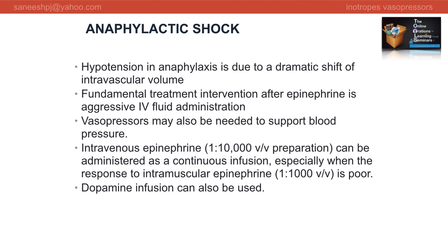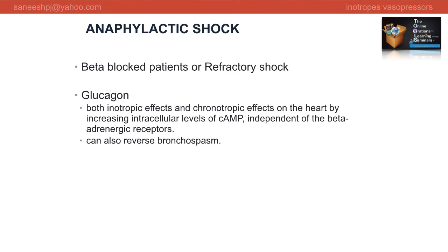Dopamine infusion at 2 to 20 micrograms per kg per minute may also be added. In cases of refractory shock or in beta-blocked patients, atropine can be tried initially for symptomatic bradycardia. Glucagon should be considered as it exerts positive inotropic and chronotropic effects on the heart independent of catecholamines. Glucagon 1 mg IV bolus followed by an infusion of 1 to 5 mg per hour may improve hypotension within 1 to 5 minutes, with maximal benefit at 5 to 15 minutes.